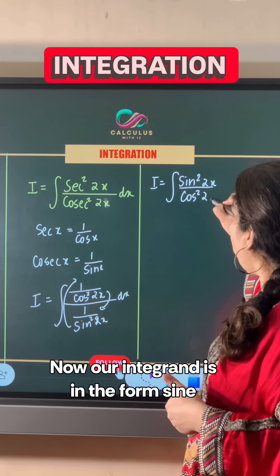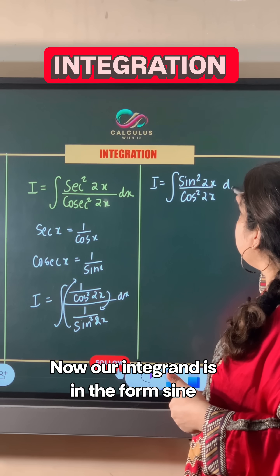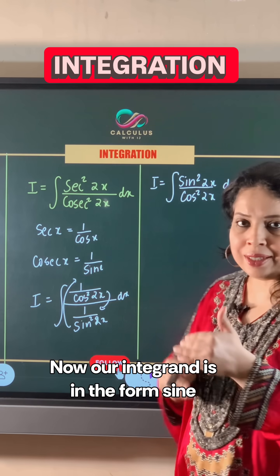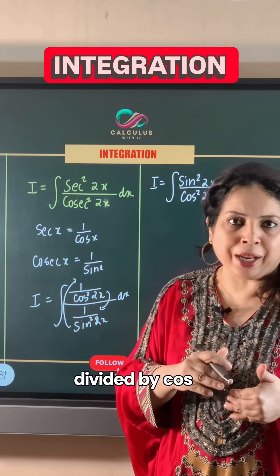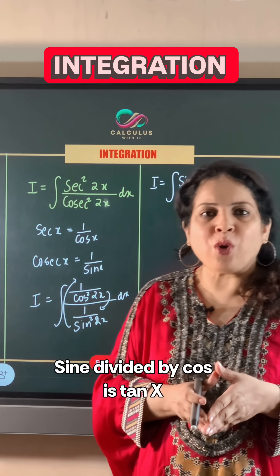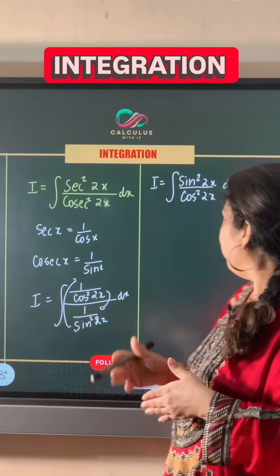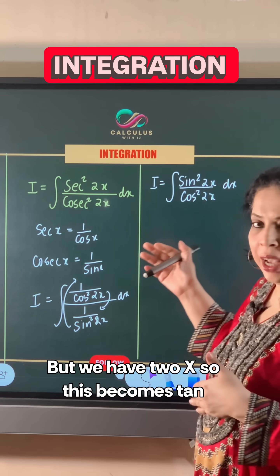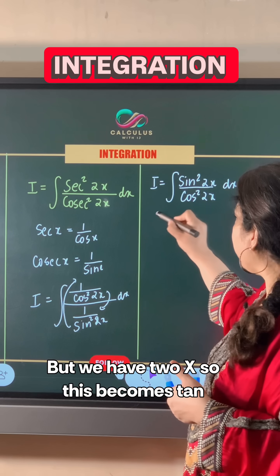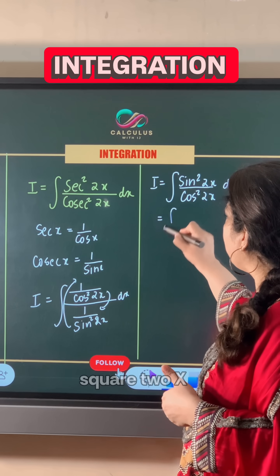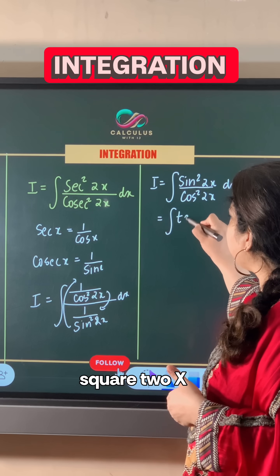Now our integrand is in the form sine divided by cos. Sine divided by cos is tan x, but we have 2x, so this becomes tan squared 2x.